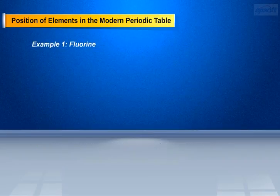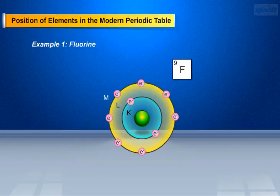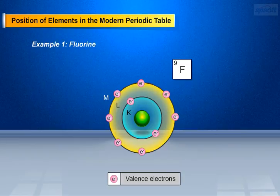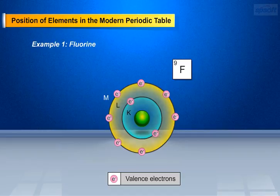For example, Fluorine. The Fluorine atom has 9 electrons in total. Orbit K contains 2 electrons. Orbit L contains 7 electrons, i.e., valence electrons. Elements having 7 valence electrons are placed in group 17 of the periodic table.